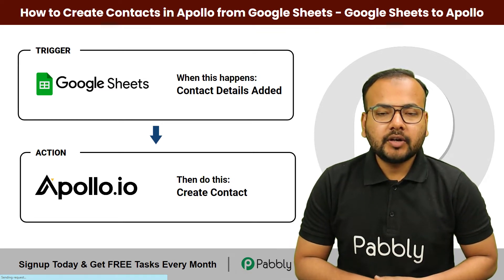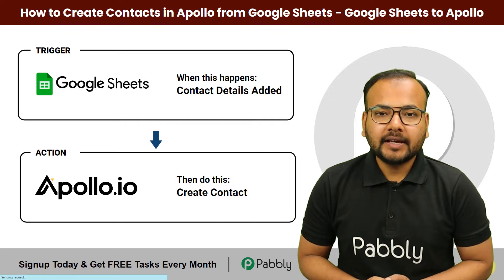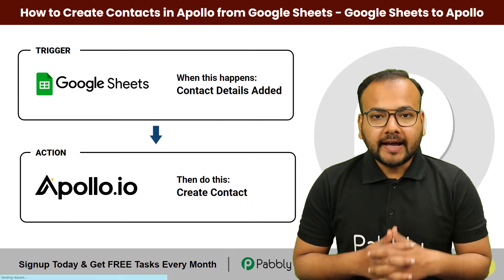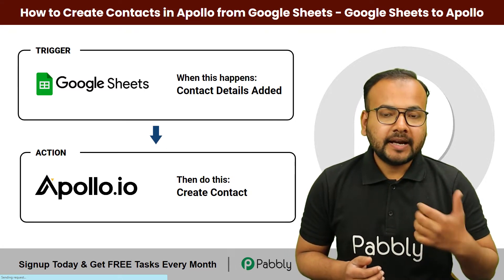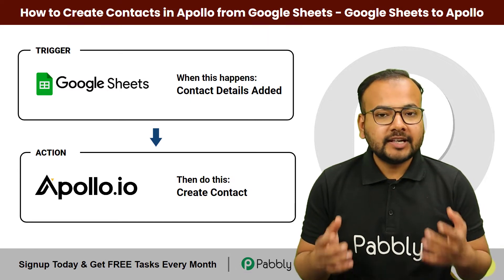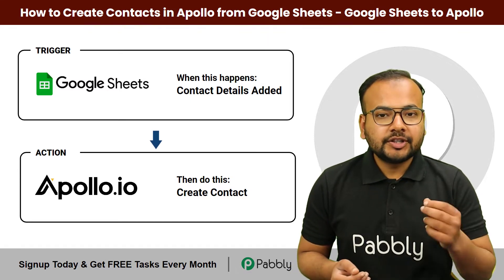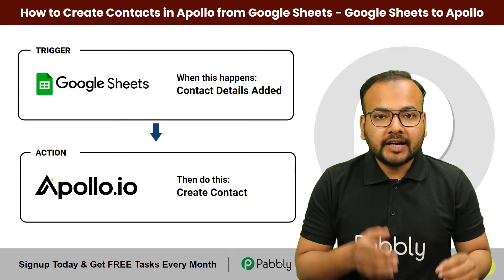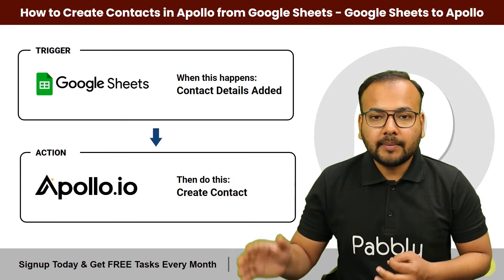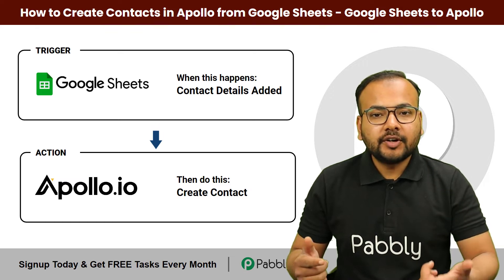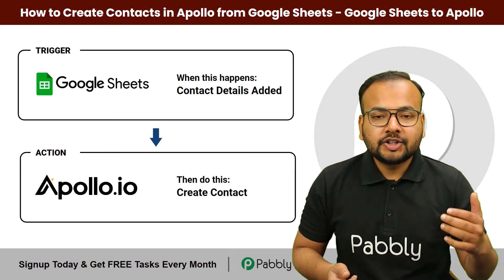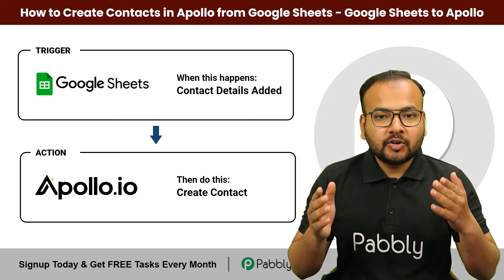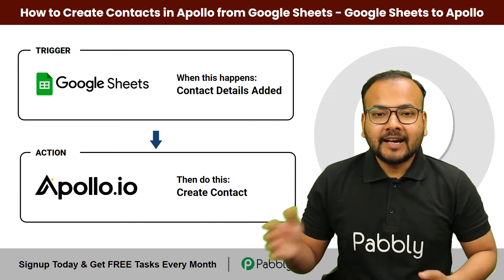In this video you will learn how you can create contacts in Apollo.io directly and automatically from your Google Sheets. Apollo.io is a sales engagement and intelligence platform by which you can improve and manage your sales. If you are using Google Sheets to maintain your list of contacts or customers and you want to send those contact details into Apollo.io automatically, this video is for you. We are going to integrate Google Sheets with Apollo.io without any coding, just a few clicks.